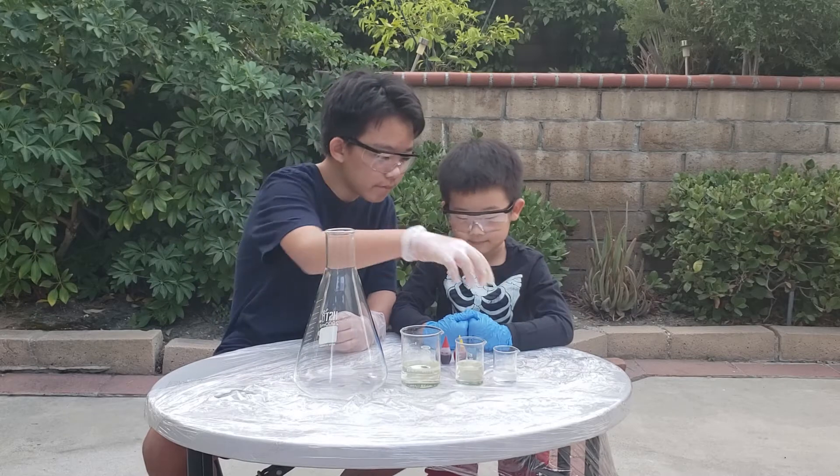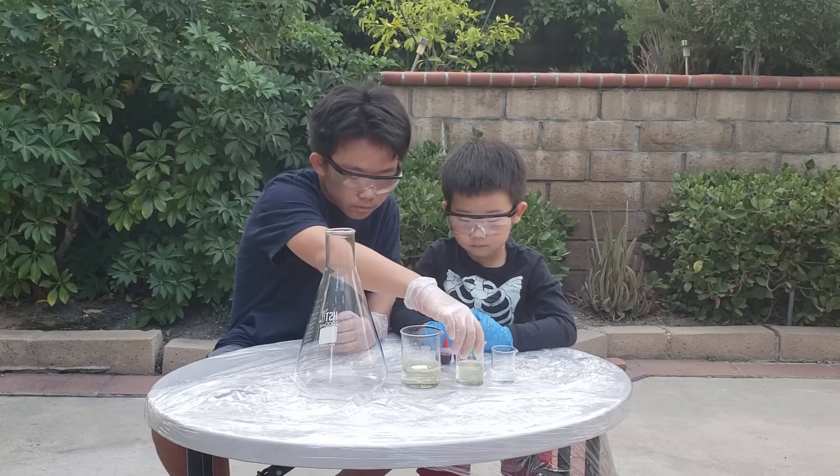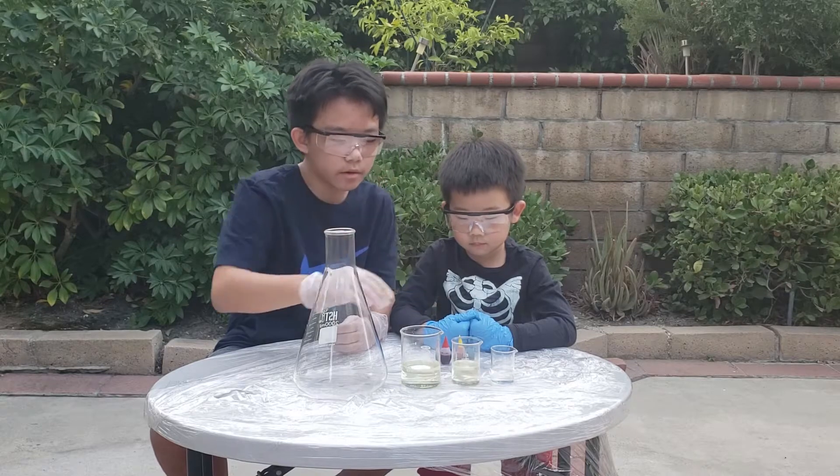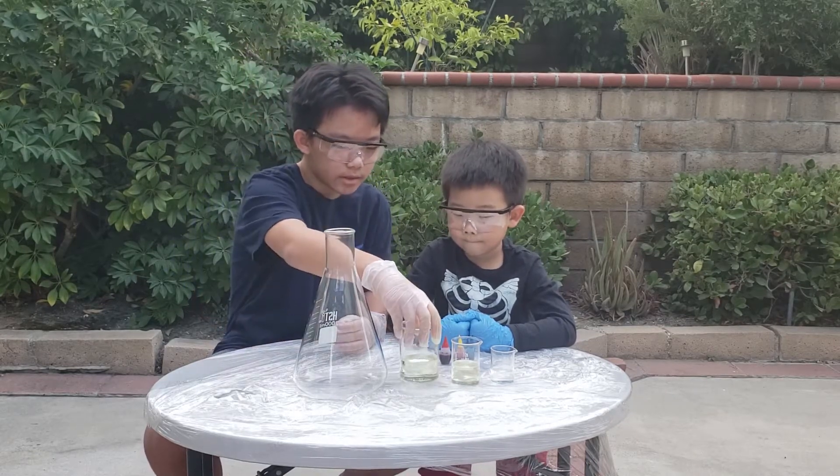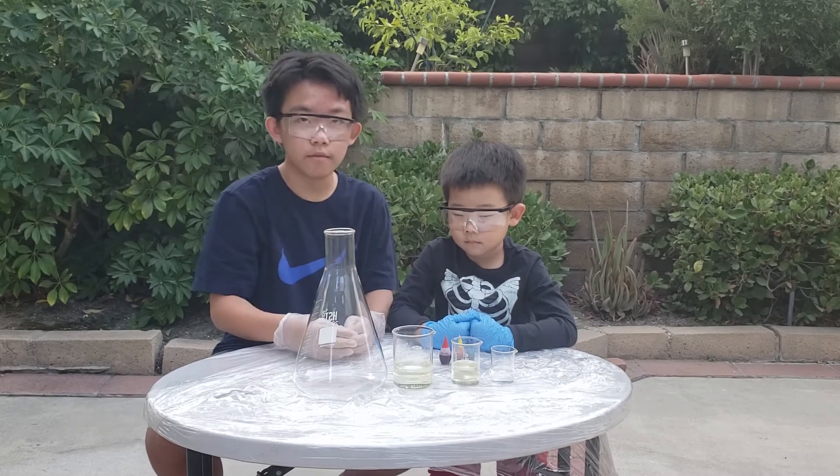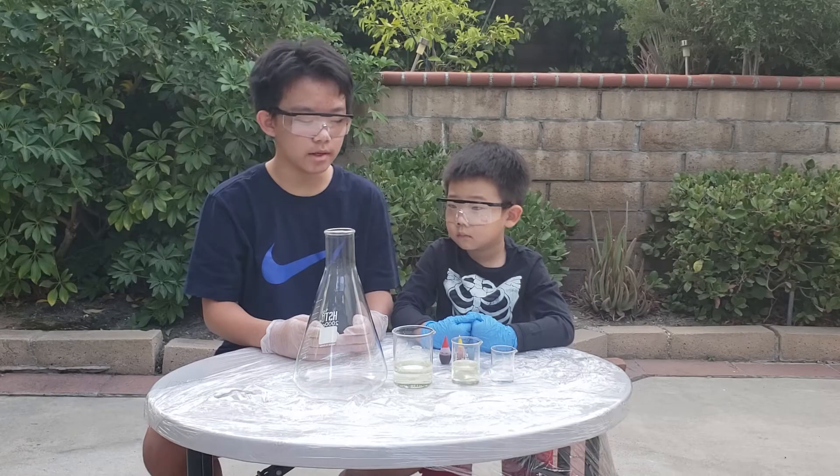One is about 20 milliliters of liquid soap. Number two is about 50 or 60 milliliters of 30% potassium iodide. And this is about 120 milliliters of concentrated hydrogen peroxide, aka 30% peroxide.